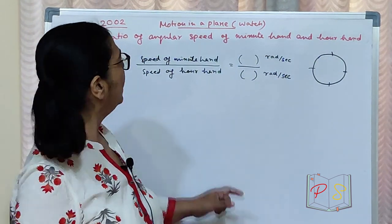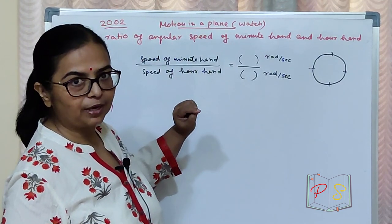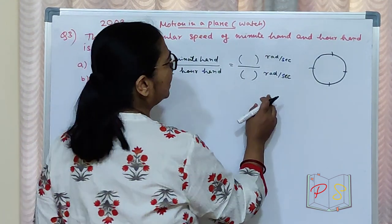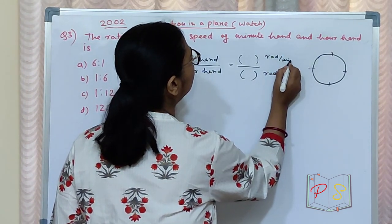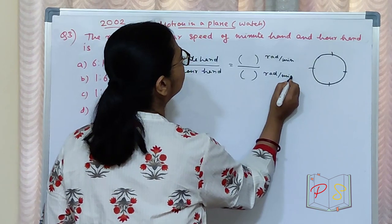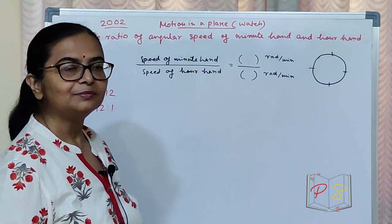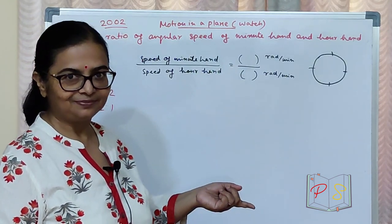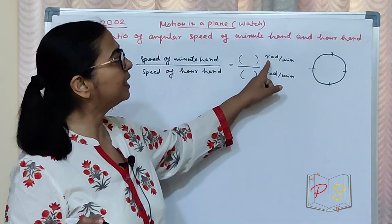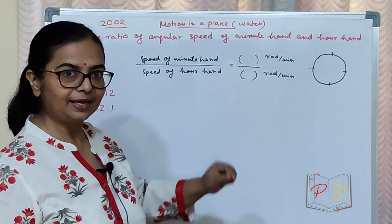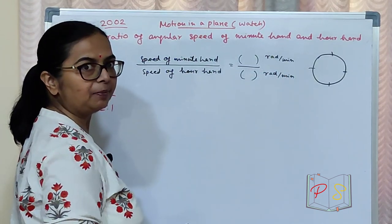Since we are taking the ratio, we take the same units. One is given in minutes, one is given in hours — so let's take both in the same unit. Take the ratio in the same unit — let's calculate the speed of the minute hand in radian per minute.